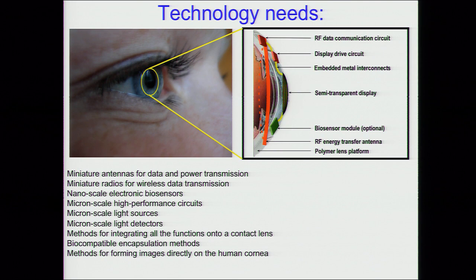Having a contact lens that monitors your health all the time and shows you extra layers of information sounds like science fiction. I have to solve a lot of problems to enable this: I have to make really small devices — small radios, antennas, sensors, light sources — and integrate all these into a contact lens, making sure the whole thing works and is safe and biocompatible. What I would like to do in the next minute or two is show you what we've done in attempting to move in this direction and make this vision a reality.